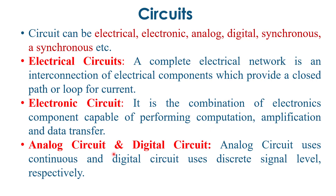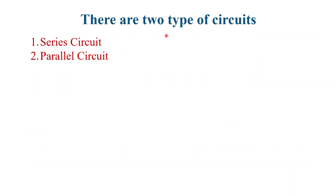Analog circuits use continuous signals and digital circuits use discrete signal levels respectively. There are also basically two types of circuits: series circuits and parallel circuits.